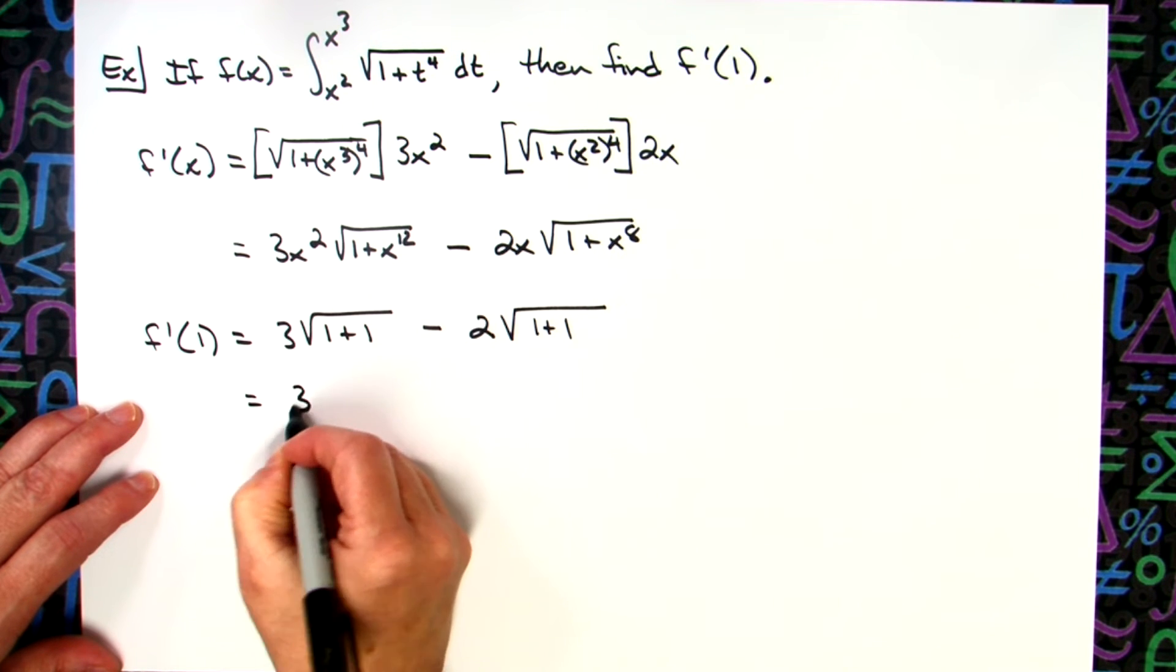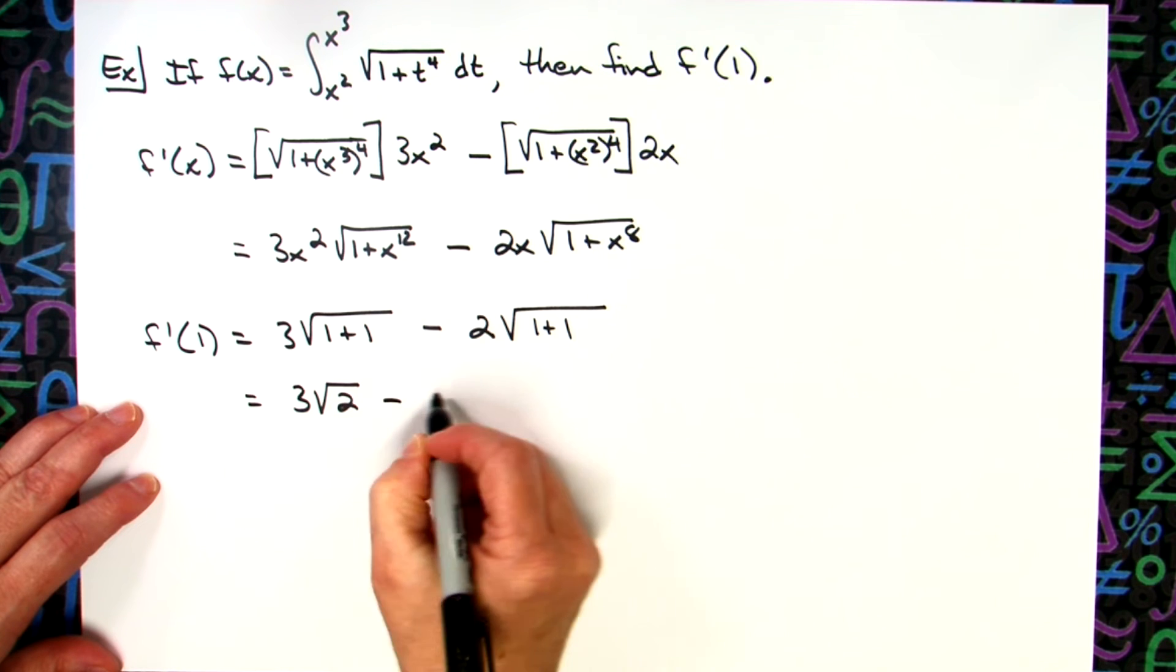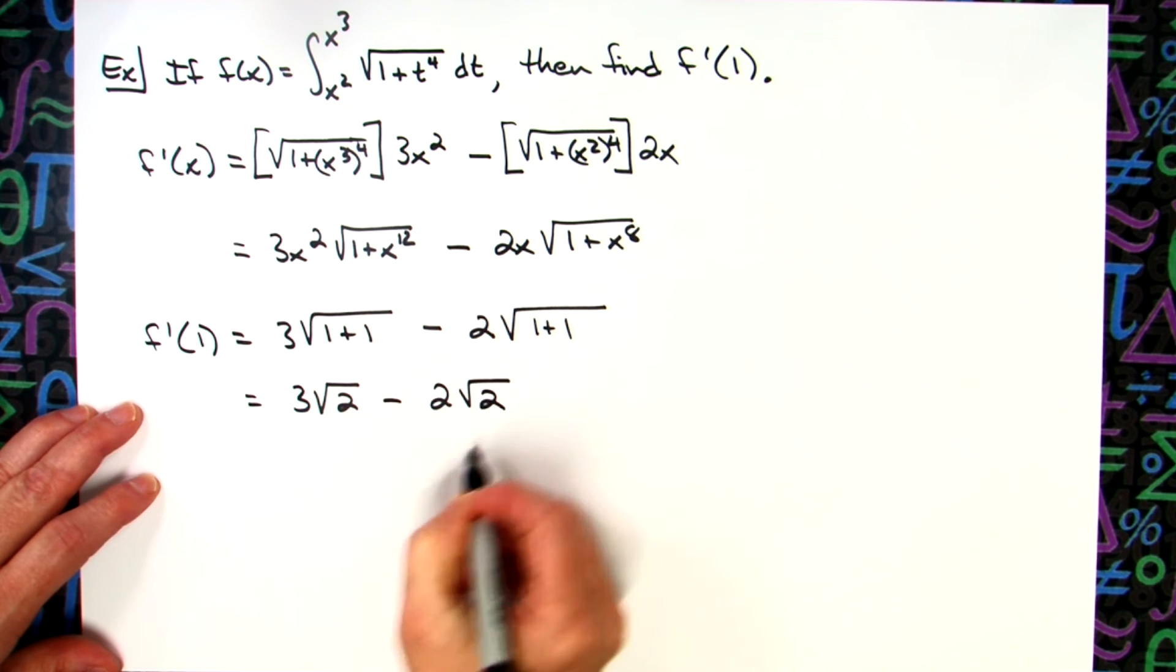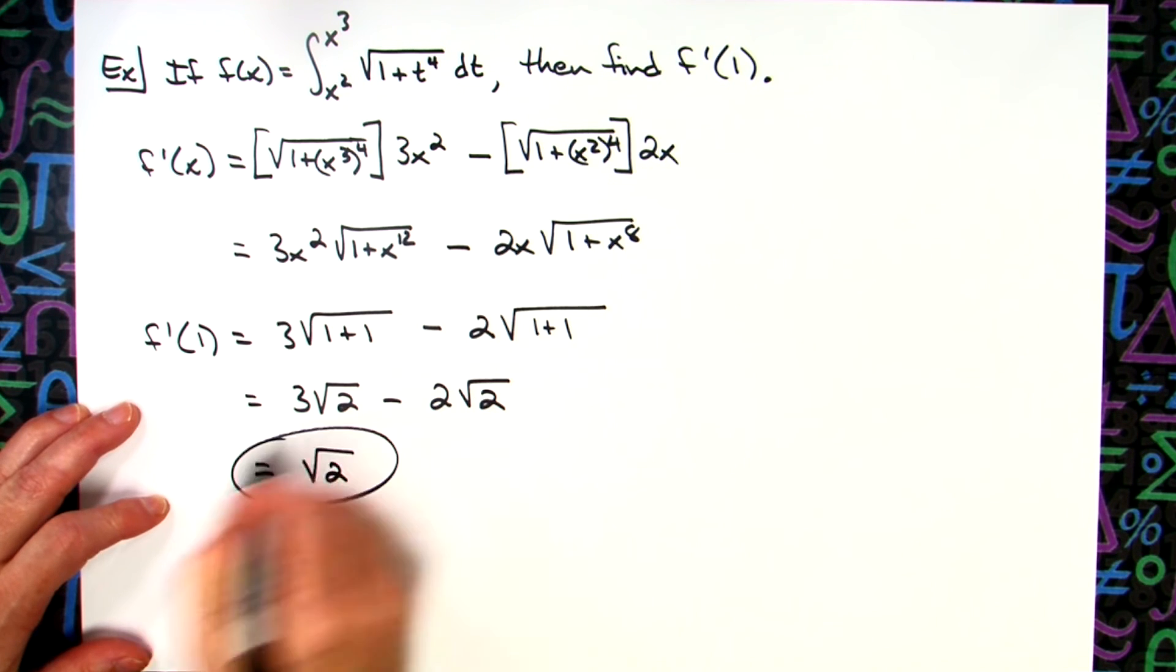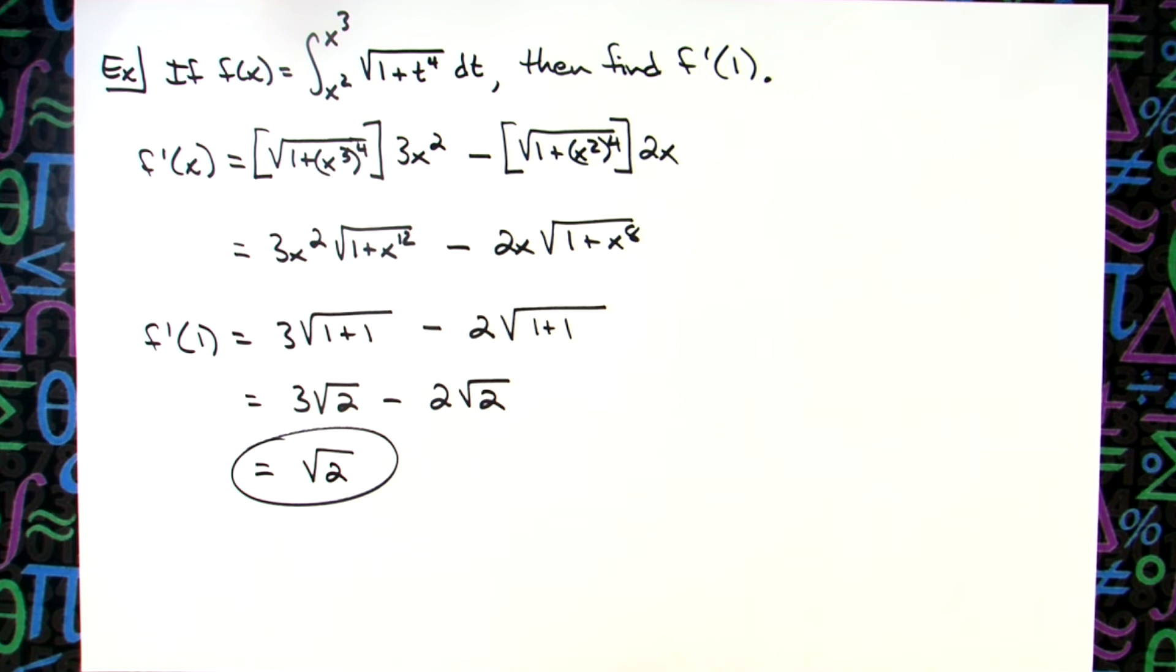Doing a little bit of simplifying here, I'll have 3 square root of 2 minus 2 square root of 2. They are like radicals. I can go ahead and get all the way down to square root of 2. So pretty straightforward finding that derivative of an integral. It's an overall arching second fundamental theorem of calculus. And then on this one, a particular numerical value since we're plugging a number into that derivative.